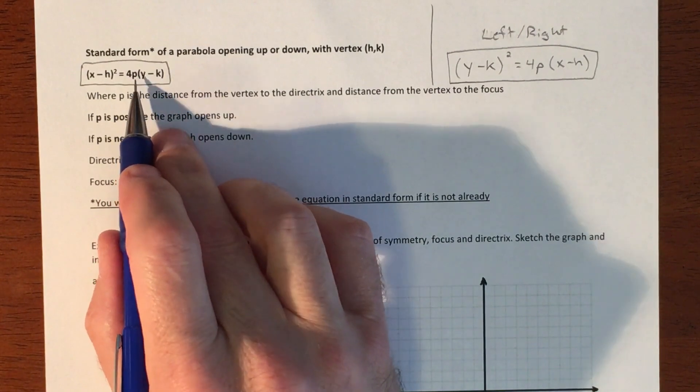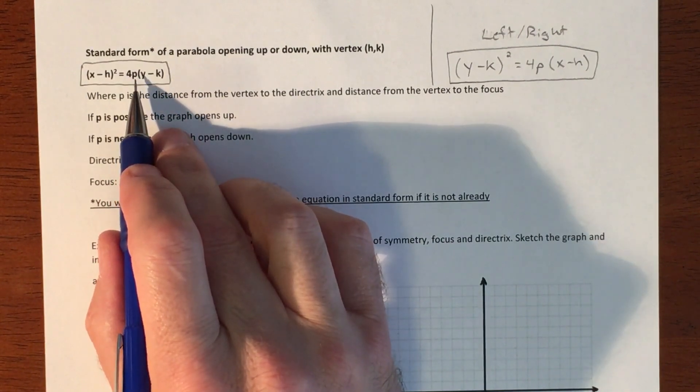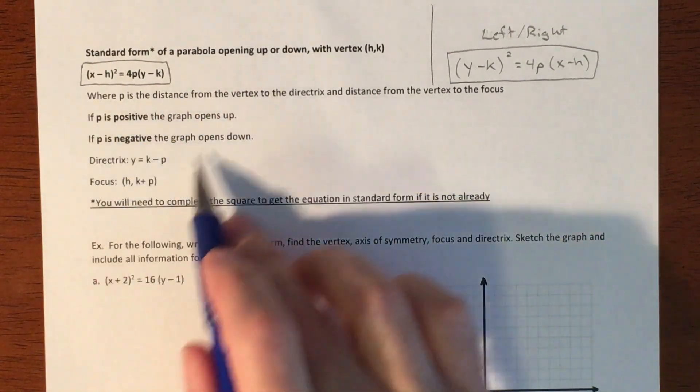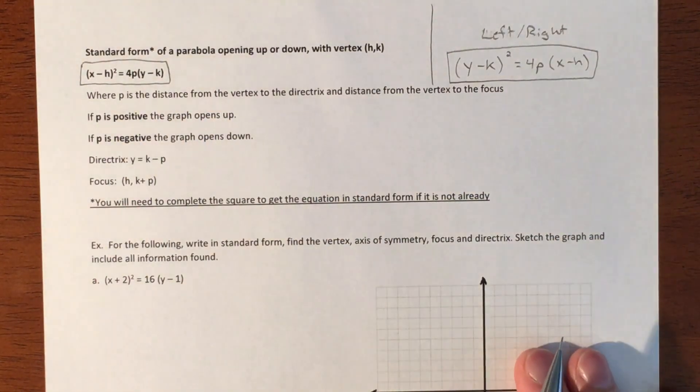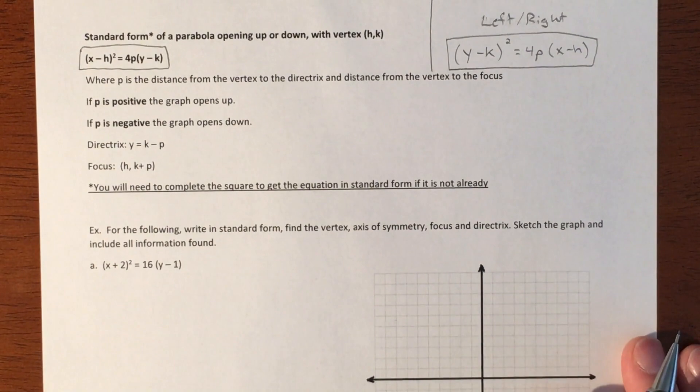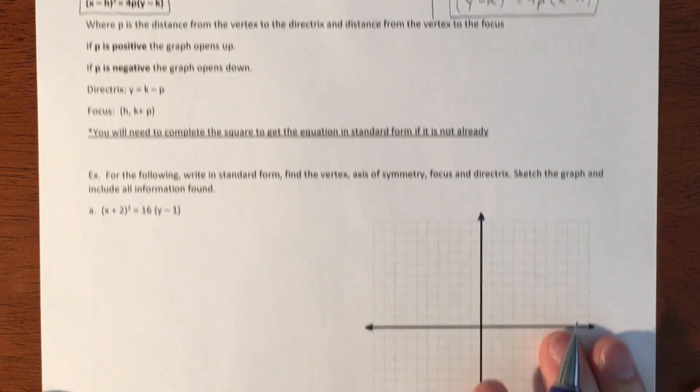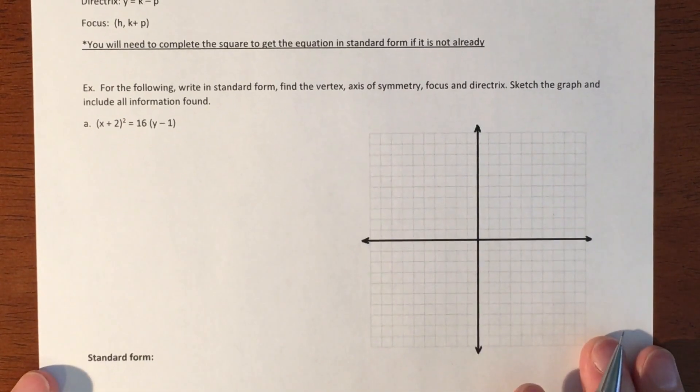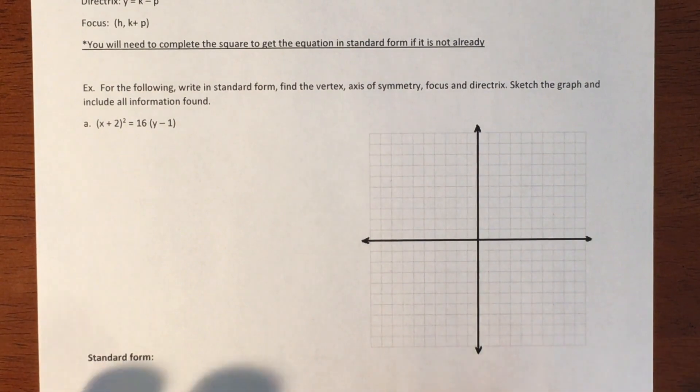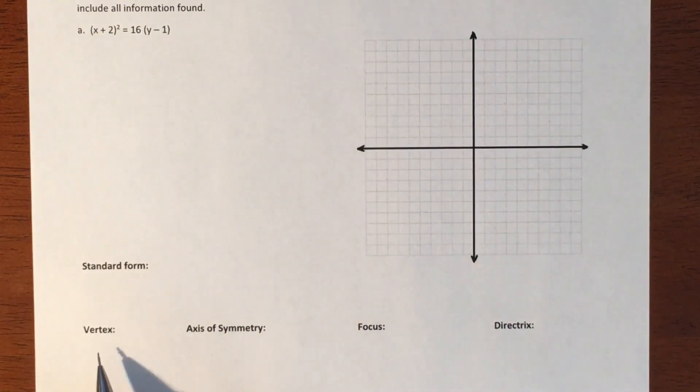We still got to figure out the p because the p is going to be our distance away from our focal point and our directrix. There are formulas and all that stuff, but I typically don't memorize that because it's just too much. I can just put it all together and build as we go.